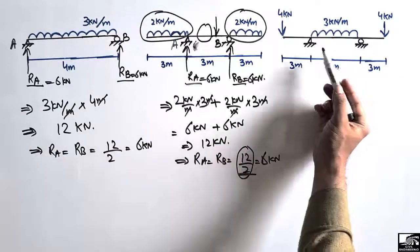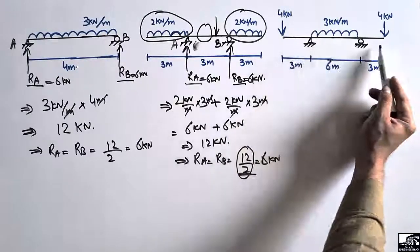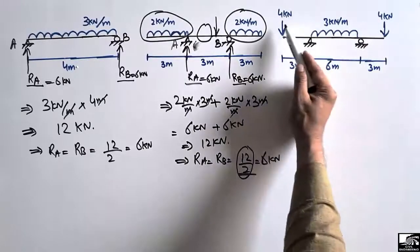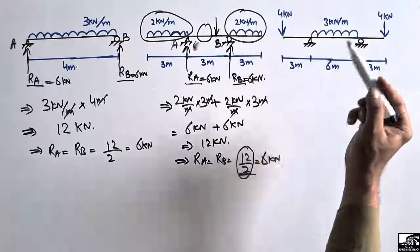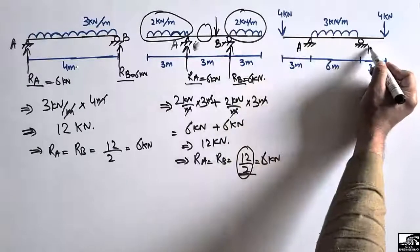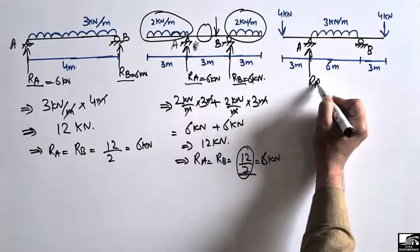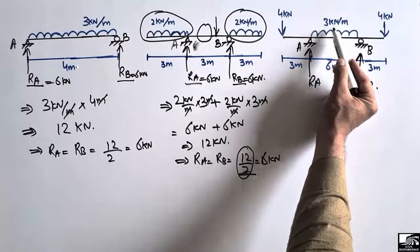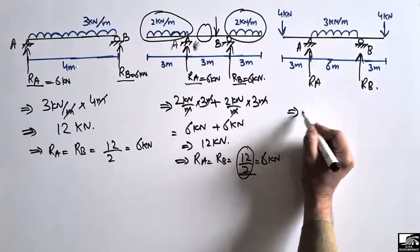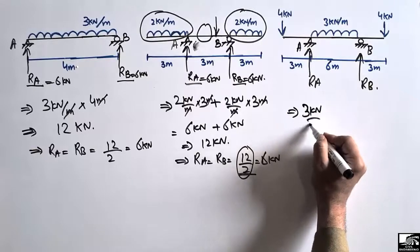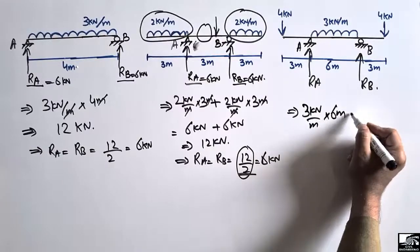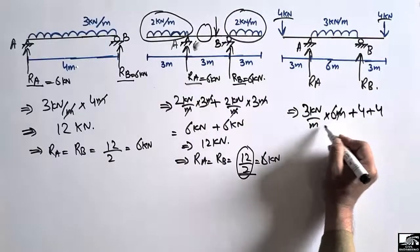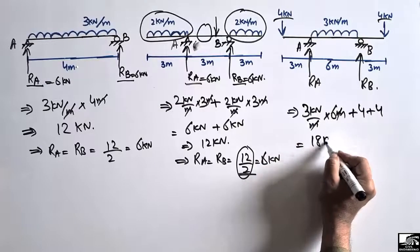Similarly, this third beam is an overhanging beam with a uniformly distributed load acting at the center and two point loads acting at the two ends. To find RA and RB, multiply the distributed load 3 kN/m over the 6 m distance: 3 kN/m × 6 m = 18 kN, plus 4 kN and 4 kN point loads at each end, giving 18 + 4 + 4 = 26 kN total.